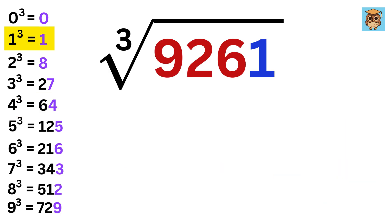We have 1 as the last digit, so write 1 here. Now cancel the last 3 digits, and then find a cube which is just less than or equal to 9, which is 8 or 2 cube. So write 2 here, and that's it. Our answer is 21.